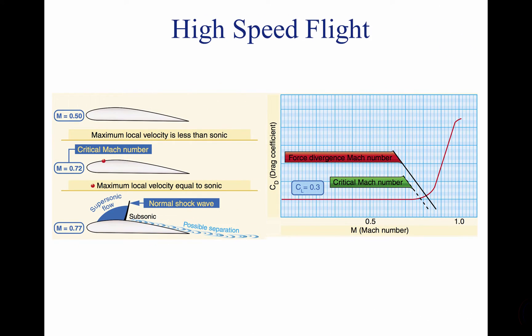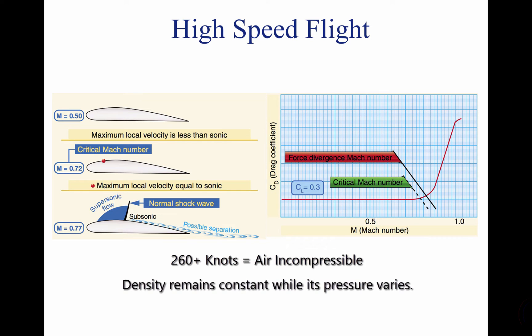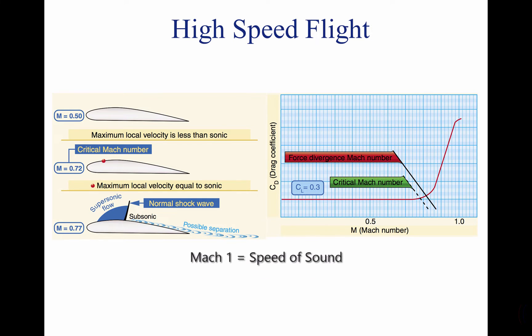In subsonic aerodynamics, the theory of lift is based upon the forces generated on a body and a moving gas, air, in which it is immersed. At speeds of approximately 260 knots, air can be considered incompressible in that, at a fixed altitude, its density remains nearly constant, while its pressure varies. Even when an aircraft is traveling slower than the speed of sound, the air over the wing may be traveling faster than the speed of sound. The speed of sound is labeled as Mach 1.